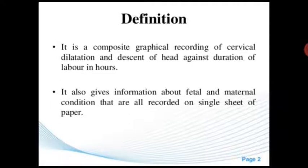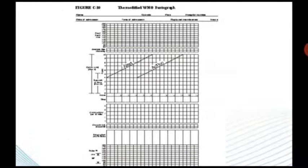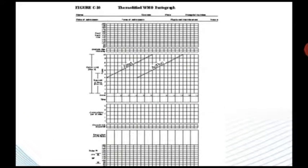All these are recorded on a single sheet of paper. This is the partograph graphical paper, which records maternal and fetal situation. It is noted in different parts — you can see the different parts of the partograph.